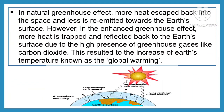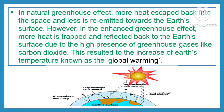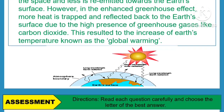In the natural greenhouse effect, more heat escapes back into space and less is re-emitted towards the Earth's surface. However, in the enhanced greenhouse effect, more heat is trapped and reflected back to the Earth's surface due to the high presence of greenhouse gases like carbon dioxide. This results in the increase of Earth's temperature, known as global warming.